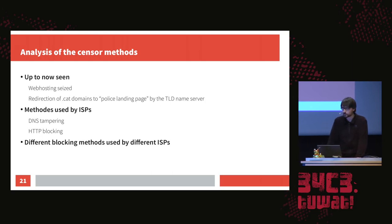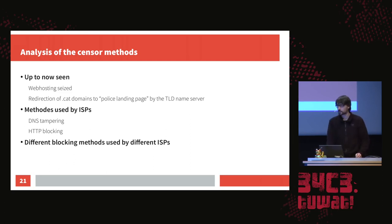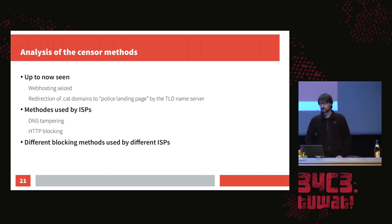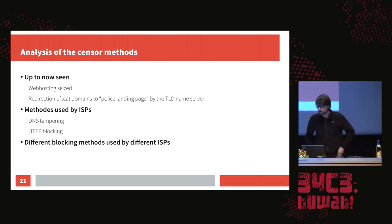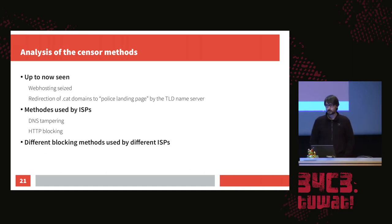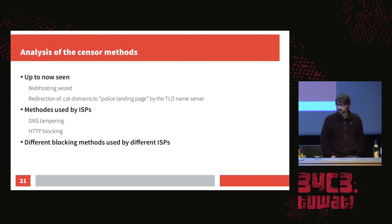From the censorship methods we've seen so far: web hosts got seized; the .cat domains were redirected to a police landing page by the TLD name server, orchestrated by the registry operator. Apart from that, the ISPs also censored. They used DNS tampering and HTTP blocking, and interestingly, different ISPs used different methods.